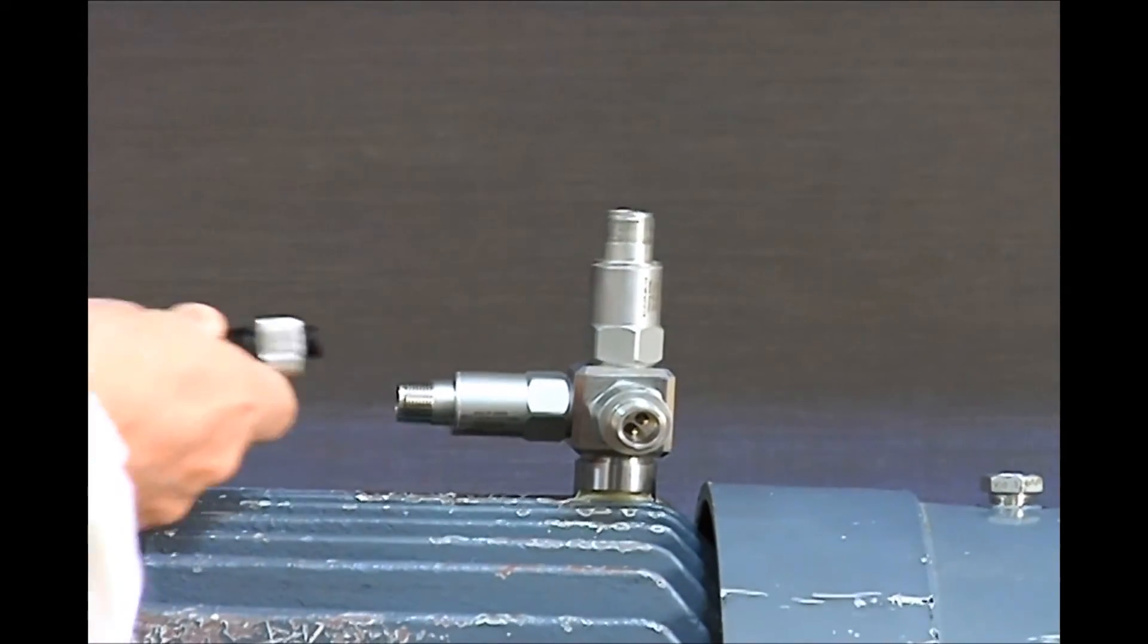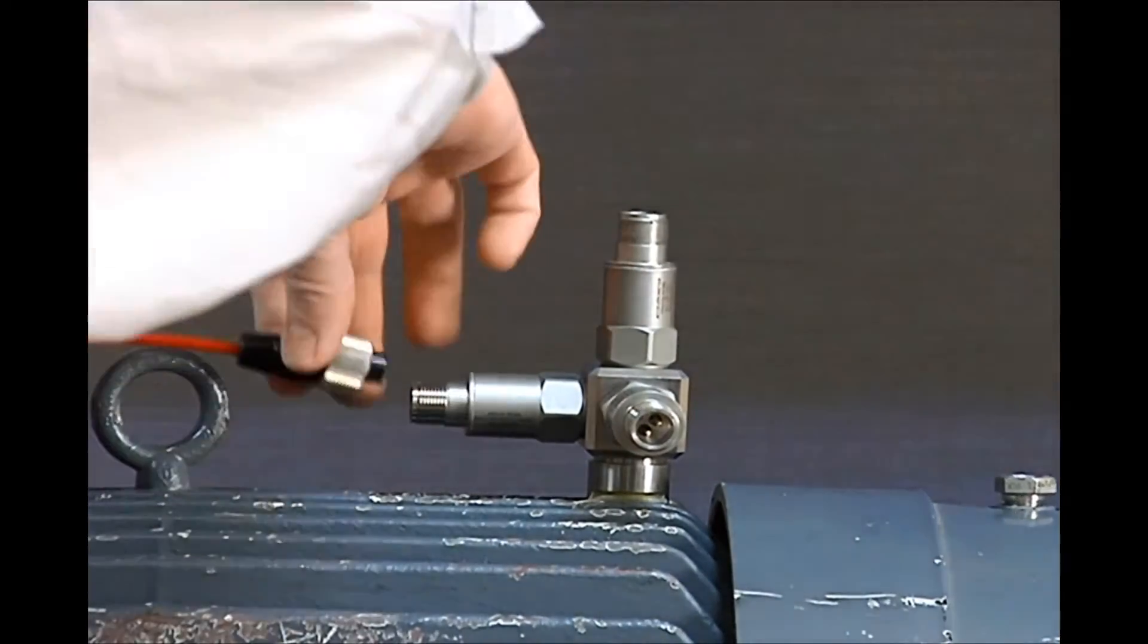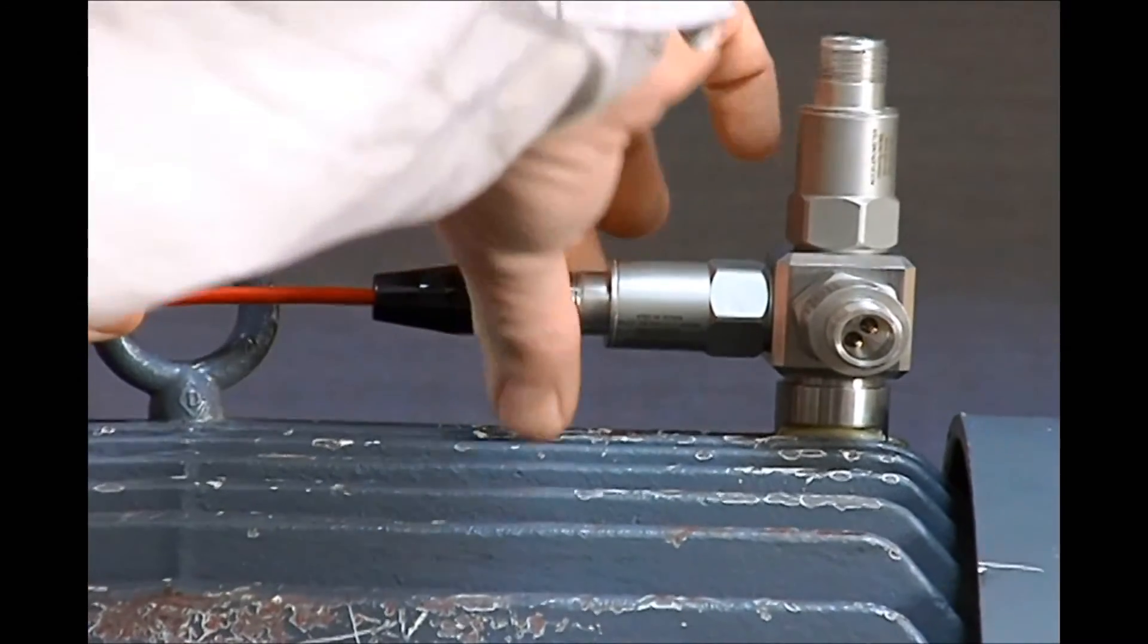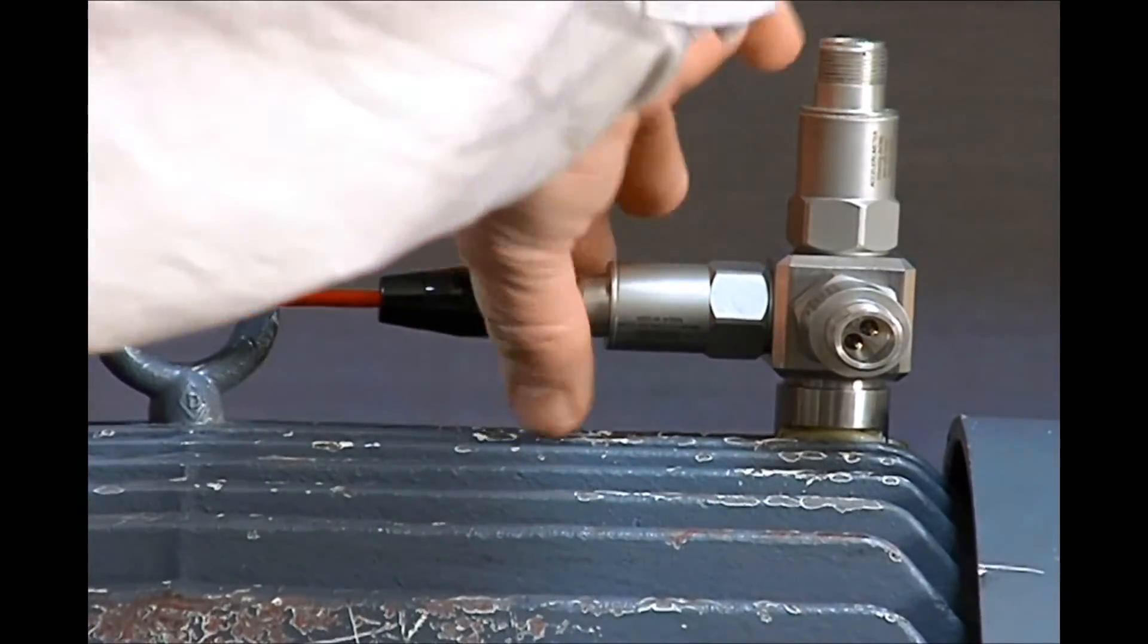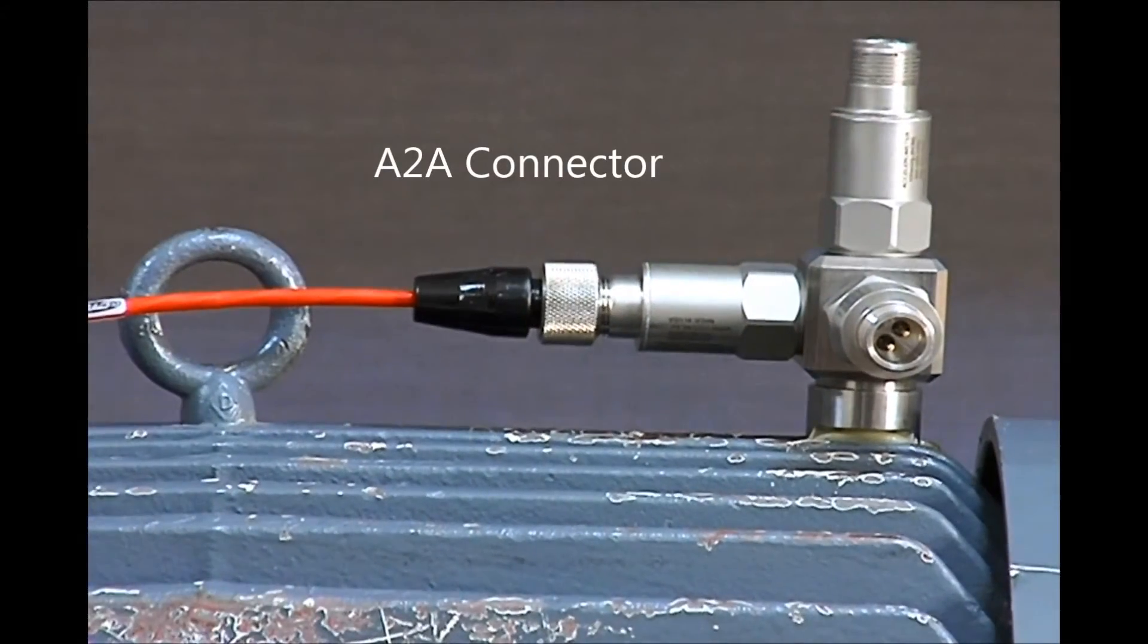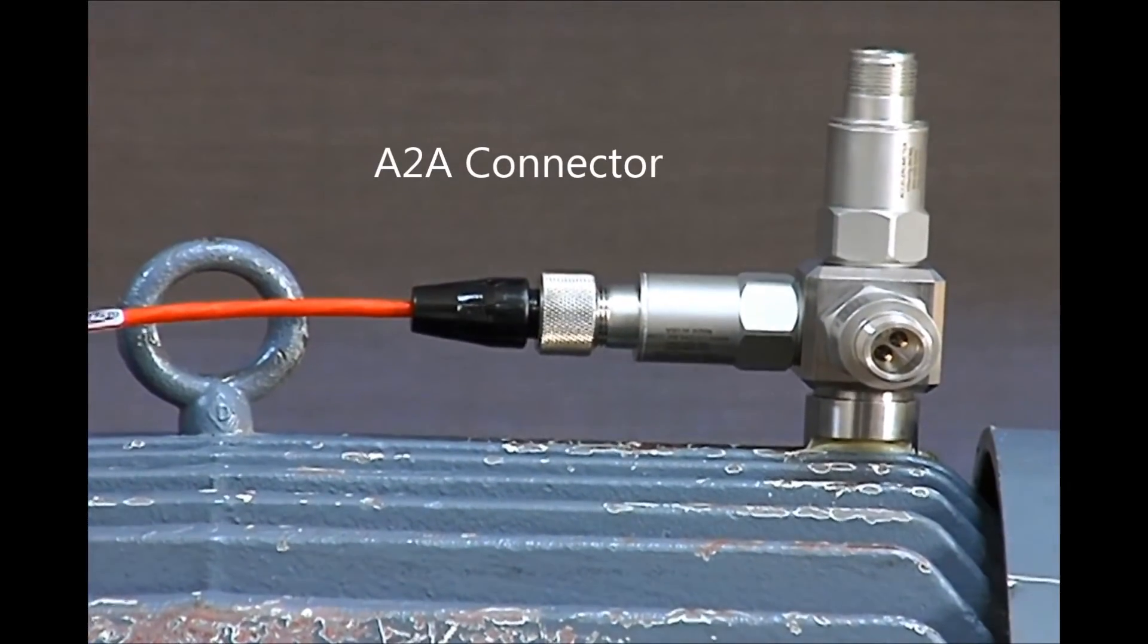Our A2A connector is a polycarbonate connector with a threaded stainless steel locking ring. Tighten it down on the sensor, and it's ready to go.